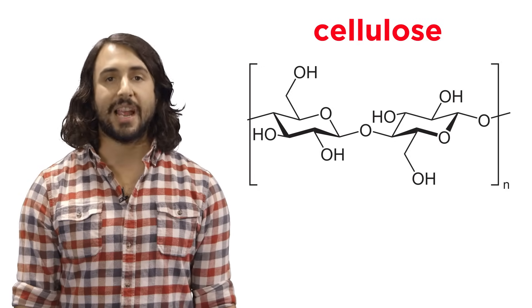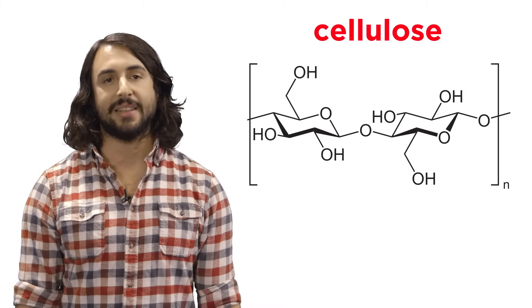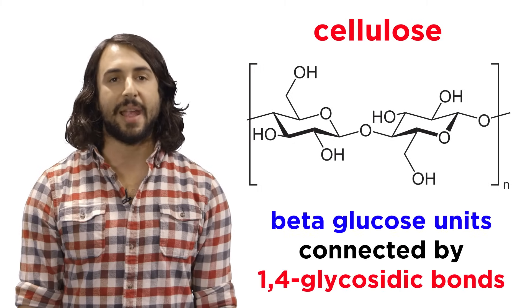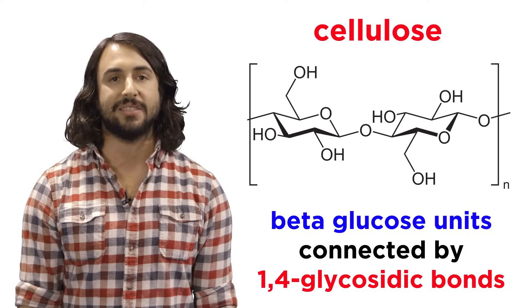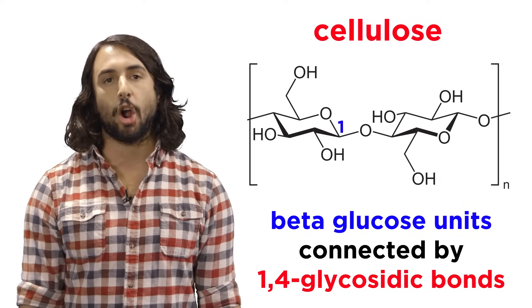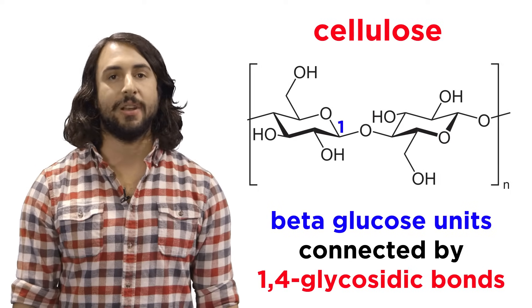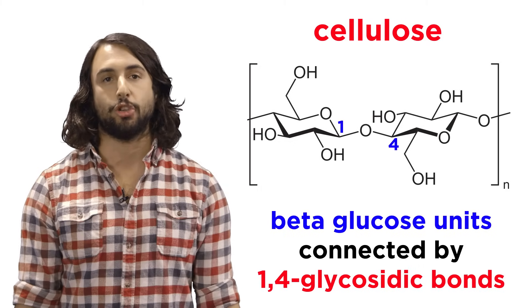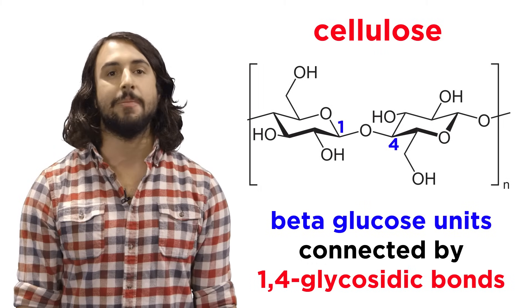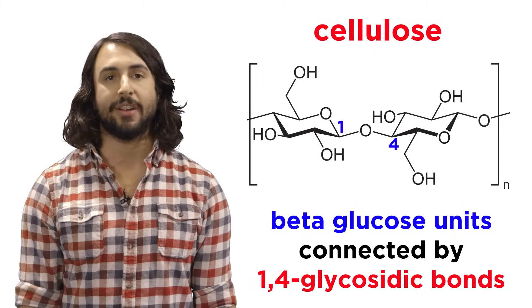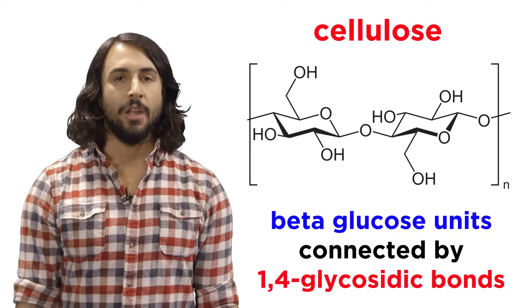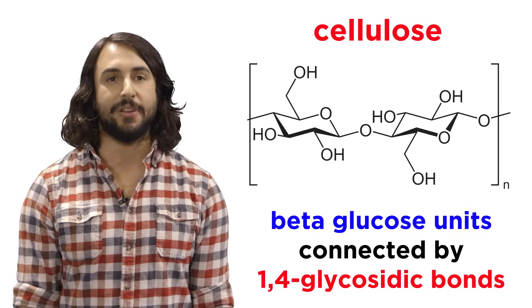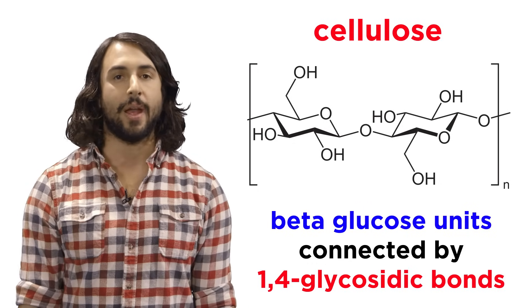For example, cellulose, which is abundant in plants, consists entirely of beta-glucose units connected via 1,4 glycosidic bonds. This means that carbon-1, the anomeric carbon of one sugar, is connected to the hydroxyl on carbon-4 of another sugar, and it will extend in beta fashion from the anomeric carbon. This pattern can extend indefinitely, with beta-glucose monomers connected in this way.